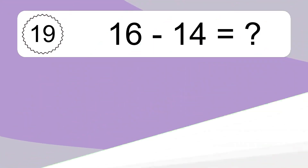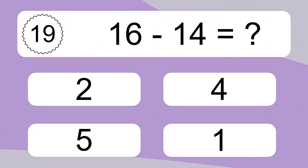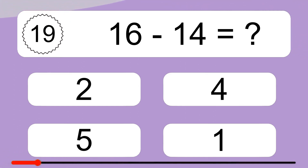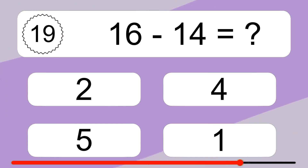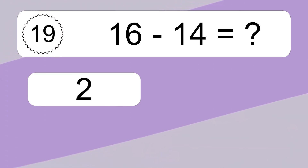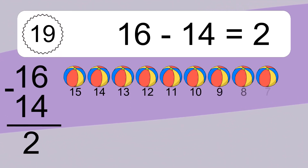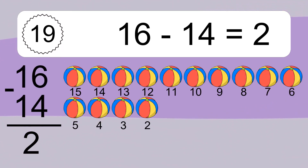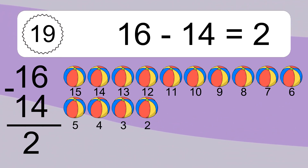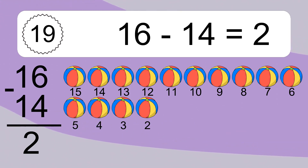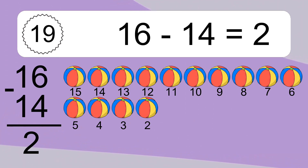16 minus 14 equals what? 16 minus 14 equals 2. Let's count it. 15, 14, 13, 12, 11, 10, 9, 8, 7, 6, 5, 4, 3, 2.